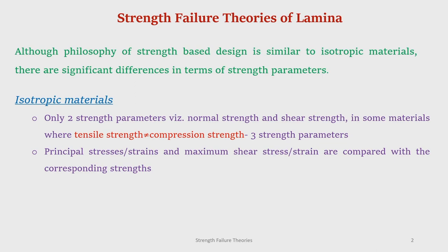The philosophy is the same: we find out the maximum stress and compare that with the corresponding strength. But there is a significant difference between isotropic materials and orthotropic materials. In isotropic material, we have only two strength parameters. We take any object made of isotropic material subjected to any kind of load, find out the principal stresses — because the principal stress sigma_1 happens to be the maximum normal stress — and also find out the maximum shear stress.